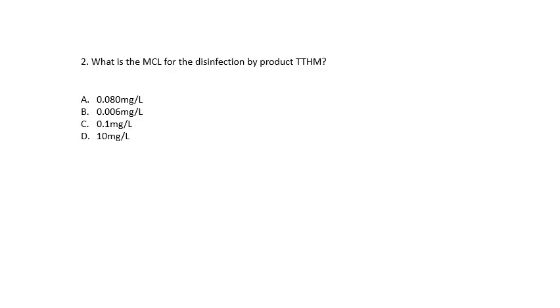Question number 2. What is the MCL for the disinfection byproduct TTHM? 0.080 milligrams per liter, 0.006 milligrams per liter, 0.1 milligrams per liter, or 10 milligrams per liter? The answer is 0.080 milligrams per liter. That is the MCL for TTHM.